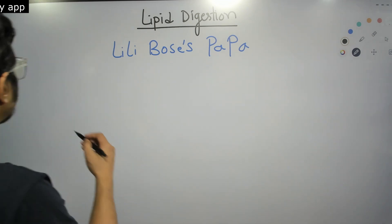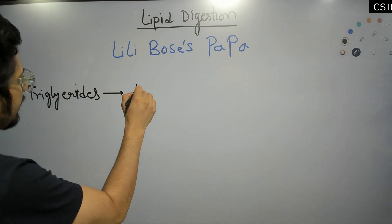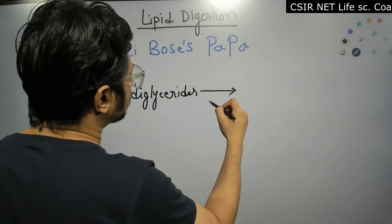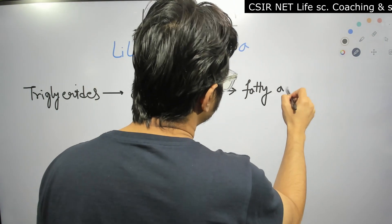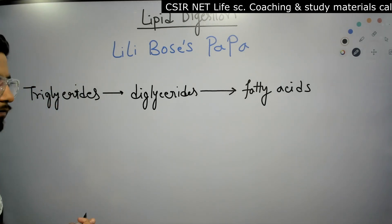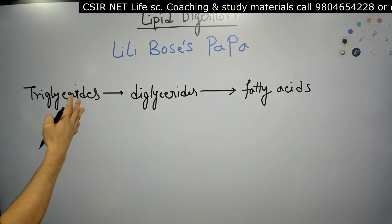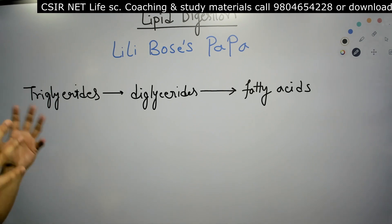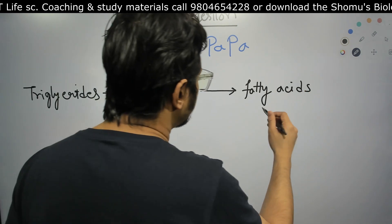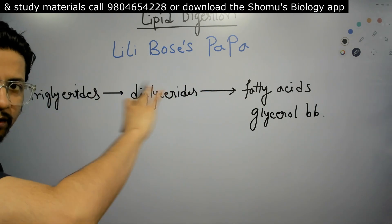When we say digestion of lipid, it starts with triglycerides. Triglycerides are converted into diglycerides, and later diglycerides are converted to fatty acids. If phospholipids are involved, the phosphate backbone and glycerol backbone get separated. So the bigger lipid molecules — triglycerides and phospholipids — are broken down to diglycerides and finally to fatty acids and glycerol.